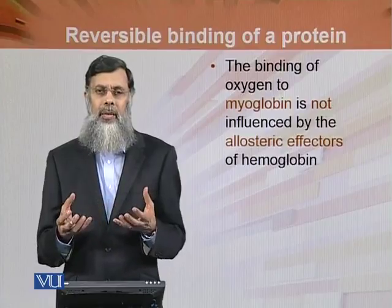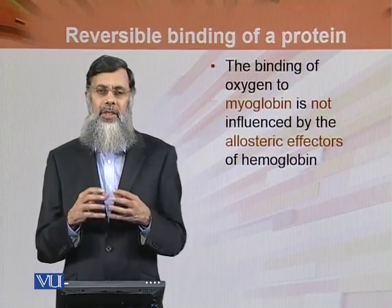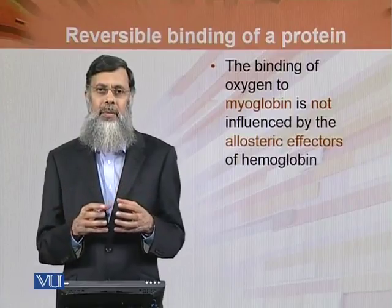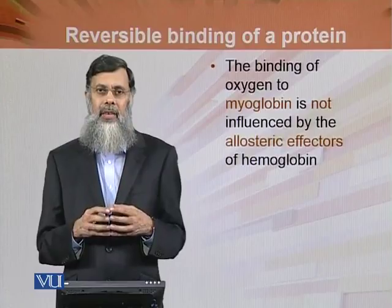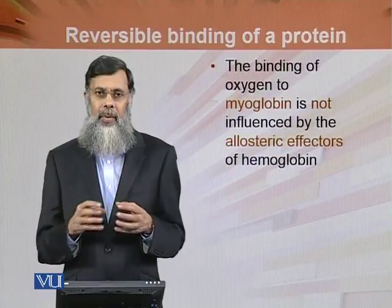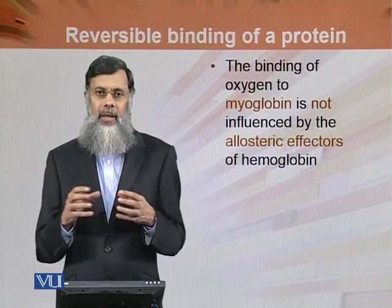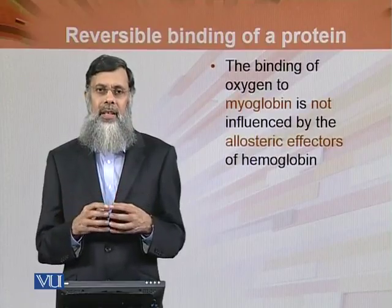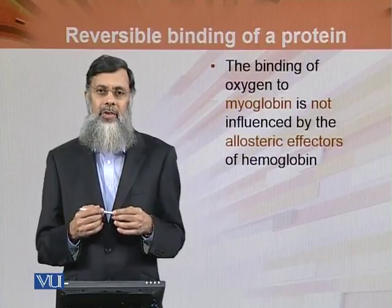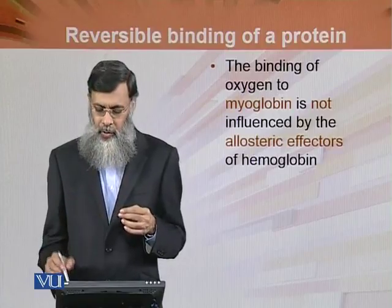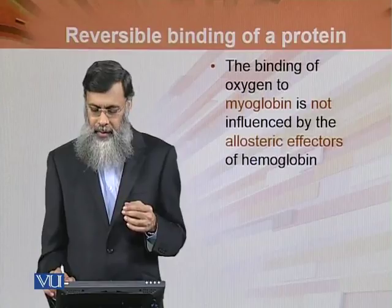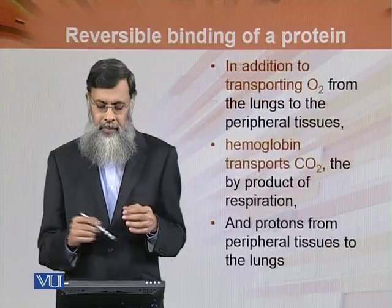Myoglobin میں multi-subunits نہیں ہیں — اس میں الگ الگ چار chains نہیں ہیں جیسے hemoglobin میں alpha chains ہوتی ہیں۔ اس لیے وہاں پہ allosteric effect نہیں نظر آتا۔